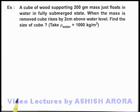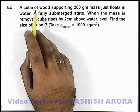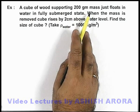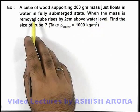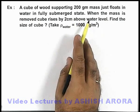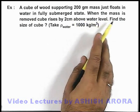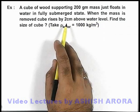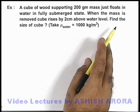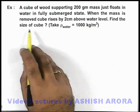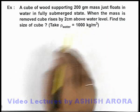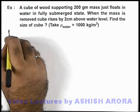In this example, we are given that a cube of wood supporting a 200 gram mass just floats in water in a fully submerged state. It is also given that when the mass is removed, the cube rises by 2 centimeters above the water level. We are required to find the size of the cube. The density of water is given as 1000 kg per meter cubed.